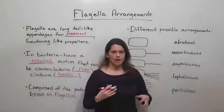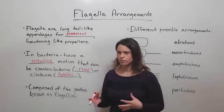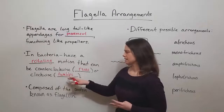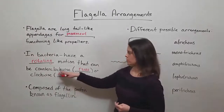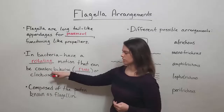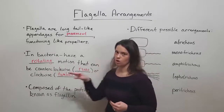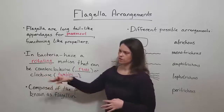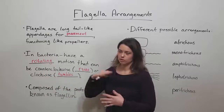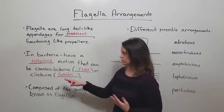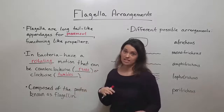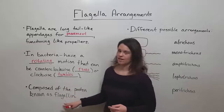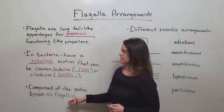This results in kind of a random type of movement sometimes, but really it is quite directional. They can move in a counterclockwise direction to make long runs in a particular direction, or they can move in a clockwise way to cause them to tumble around and change direction before switching to do a run in a different direction. These are composed of the protein known as flagellin in bacterial cells.